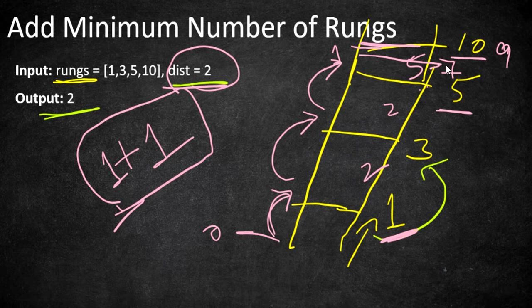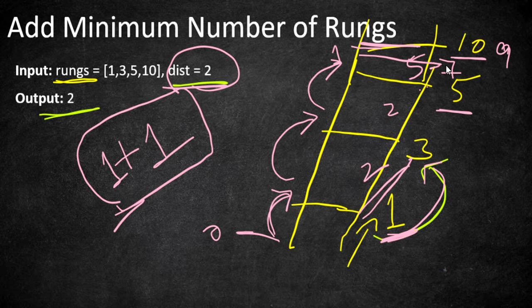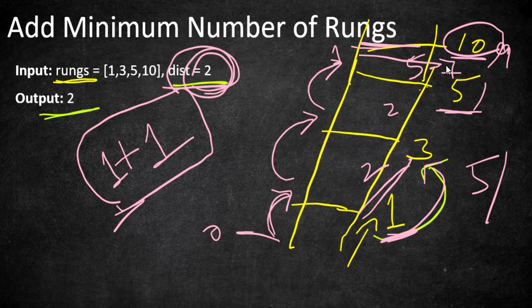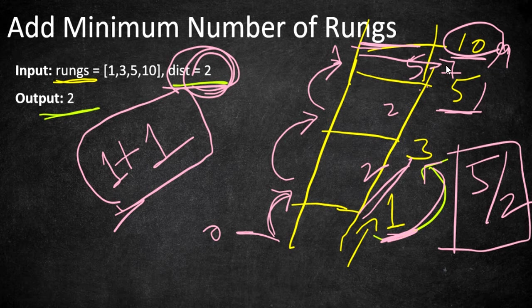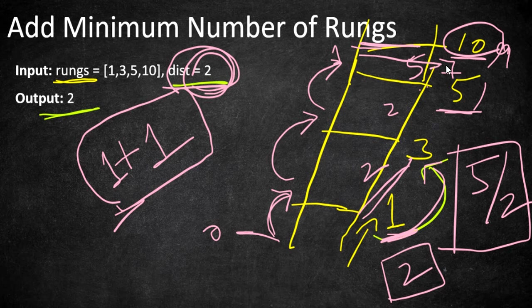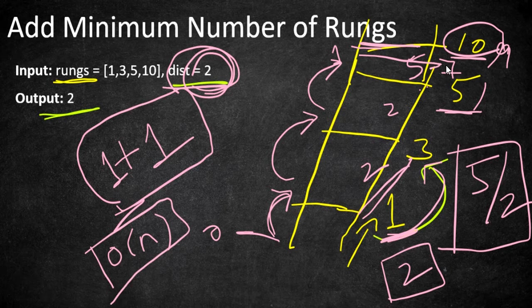Although this problem is under the medium category, it is quite easy. We simply calculate the difference between consecutive integers by iterating the array. If we find a difference larger than the given distance, we calculate how many rungs to add — which is the difference divided by the maximum distance. For example, 5 divided by 2 gives 2 (integer division), so we need 2 rungs. This runs in O(n) time complexity as we iterate the array only once.